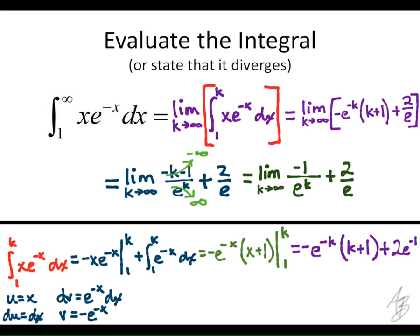Can we evaluate this limit now? As k approaches infinity, what does e to the k do? It goes to infinity. What's negative 1 divided by infinity? 0, right? So we get 0 plus 2 over e, which is 2 over e.